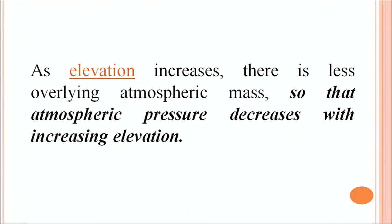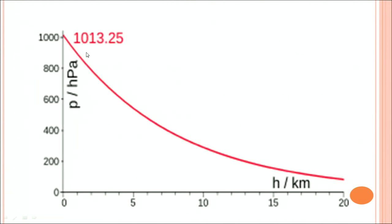As elevation increases there is less overlying atmospheric mass, so atmospheric pressure decreases with increasing elevation. Through this graph we want to show that if the height increases, which is on the x-axis given in terms of kilometers, and the pressure on the y-axis given by the pascal unit, as the height increases the pressure decreases with an exponential drop. This drop shows that with the rise in height or altitude the atmospheric pressure decreases. You can see the maximum pressure denoted here is 1013.25, that is the most ideal pressure which is exerted on this planet.